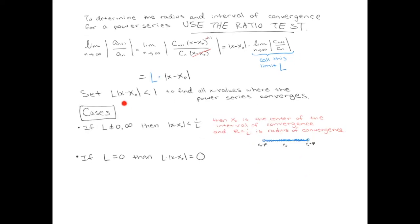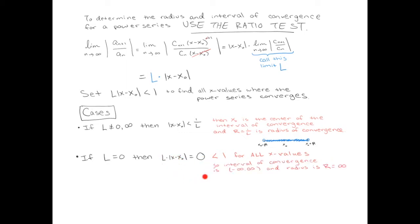We did an example like that in class. Suppose l is equal to 0. Then l times x minus x_0 equals 0. Anything times 0 is 0, and 0 is less than 1 always — it doesn't matter what the x values are. If l is equal to 0, then every x value plugged in gives just 0, which is less than 1. In this case, the interval of convergence is everything, from minus infinity to infinity, and the radius of that interval is infinity.